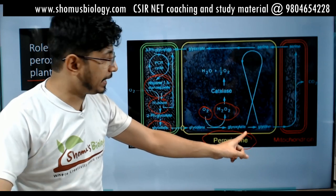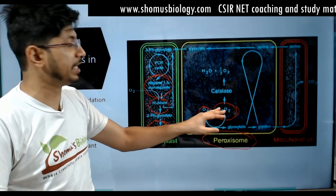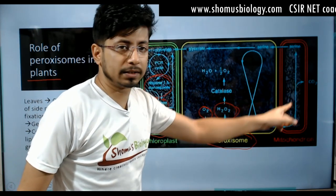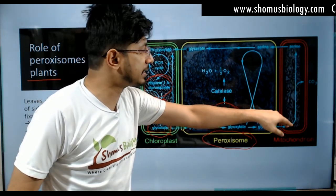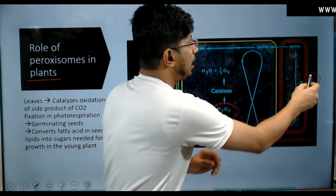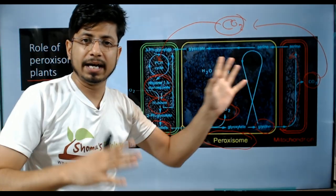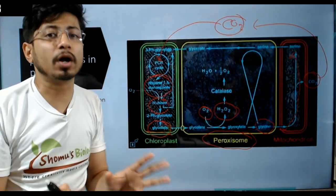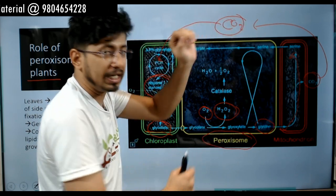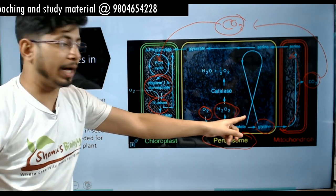Glycolate is converted to glyoxylate by this process, and the byproduct H2O2 — hydrogen peroxide — is produced in the paroxysm, which is toxic and dangerous. This glyoxylate is then converted to glycine. Glycine can be inserted back into the mitochondria, where it is converted into serine. The conversion of glycine into serine generates CO2 — that's how plants get CO2 and how CO2 can be utilized by Rubisco to fix carbon. That's how the whole process can be normalized. But to normalize the process, engagement of paroxysm is very, very crucial because there is no other organelle that can convert glycolate and generate CO2 through this pathway.